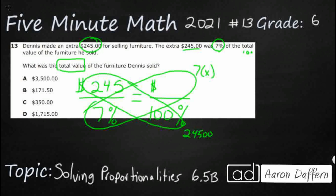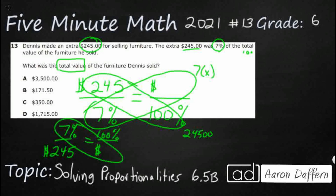Some of you might be thinking: what happens if I put the 7% on top — 7% over 245? As long as you've got the terms in the correct spots looking across, so we'd get 100% on top and the dollar amounts on the bottom, we're still going to get the same cross multiplication. We're still going to get 7x equals 24,500. So it doesn't really matter if you flip what's in the numerator and what's in the denominator — we're still going to get the same thing.